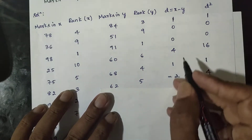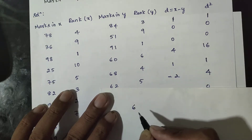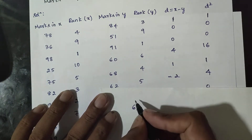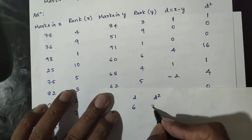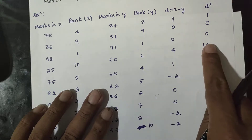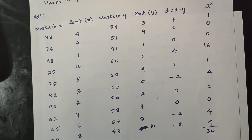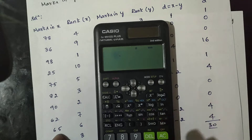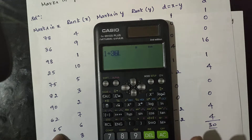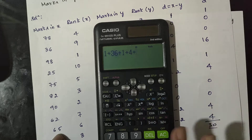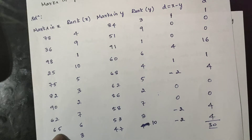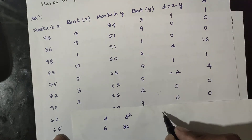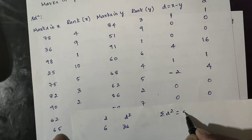Working through the values: d equals 6, d² equals 36. Computing the sum: 1 plus 36 plus 1 plus 4 plus 4 plus 4. The total summation of d² is equal to 50. This is the incorrect sum.